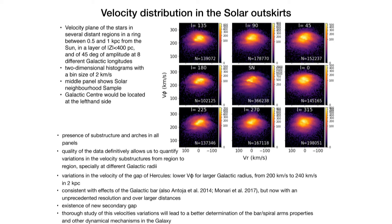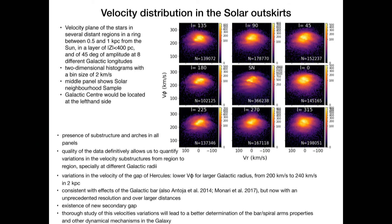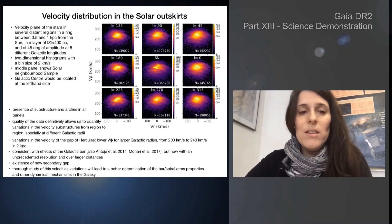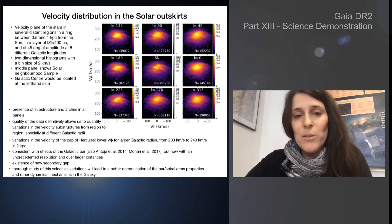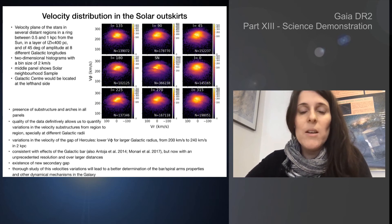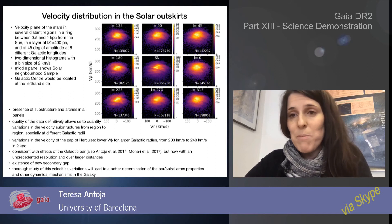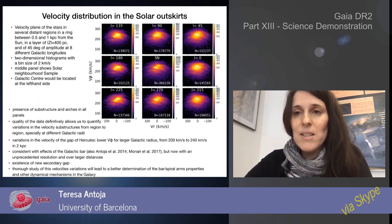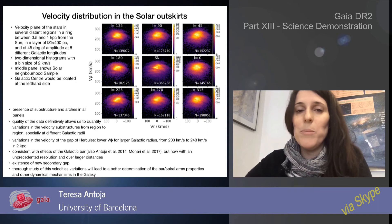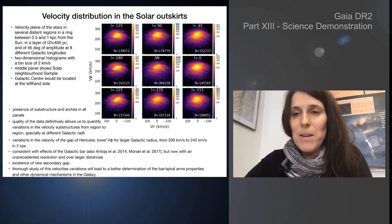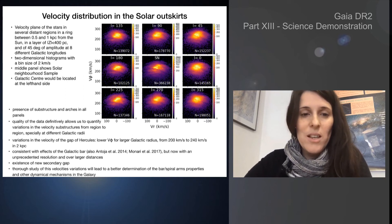These changes are consistent with the effects of the galactic bar. To conclude, all these changes that we can measure in velocity will allow us in the future, with more detailed modeling, to get a better determination of the spiral and bar properties such as their pattern speed, their pitch angle, their strength, and also to put more constraints on other dynamical mechanisms that are going on in the galaxy.